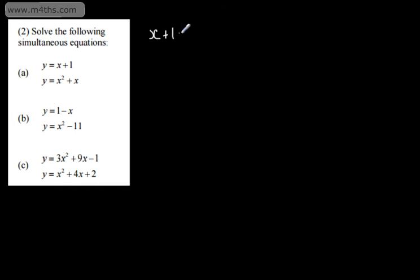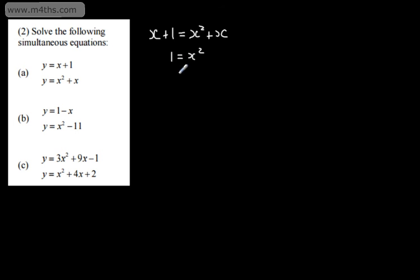I can simply say that x plus 1 will be equal to x squared plus x. This has now eliminated y from the equations. I'm going to subtract x from both sides, and that gives me that x squared is equal to 1. Taking the square root of both sides, we get plus or minus the square root of 1, which gives x is equal to plus or minus 1.